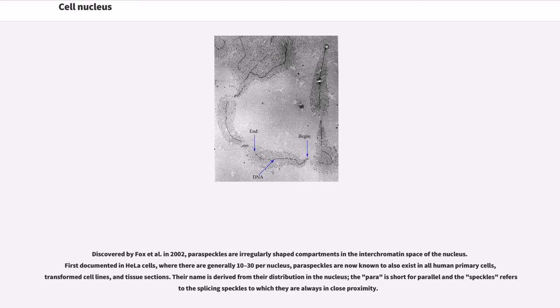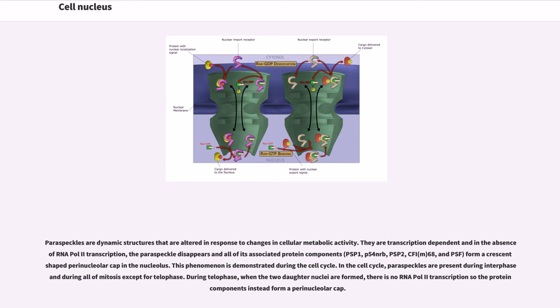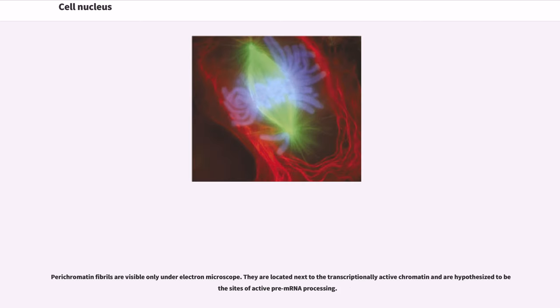Paraspeckles are irregularly shaped compartments in the interchromatin space of the nucleus, first documented in HeLa cells, where there are generally 10 to 30 per nucleus. Paraspeckles are now known to also exist in all human primary cells, transformed cell lines, and tissue sections. Their name is derived from their distribution in the nucleus - the para is short for parallel and the speckles refers to the splicing speckles to which they are always in close proximity. Paraspeckles are dynamic structures that are altered in response to changes in cellular metabolic activity. They are transcription-dependent and in the absence of RNA Pol II transcription, the paraspeckle disappears and all of its associated protein components, PSP1, p54nrb, PSP2, CFI(m)68, and PSF, form a crescent-shaped perinucleolar cap in the nucleolus. This phenomenon is demonstrated during the cell cycle. In the cell cycle, paraspeckles are present during interphase and during all of mitosis except for telophase. During telophase, when the two daughter nuclei are formed, there is no RNA Pol II transcription so the protein components instead form a perinucleolar cap.